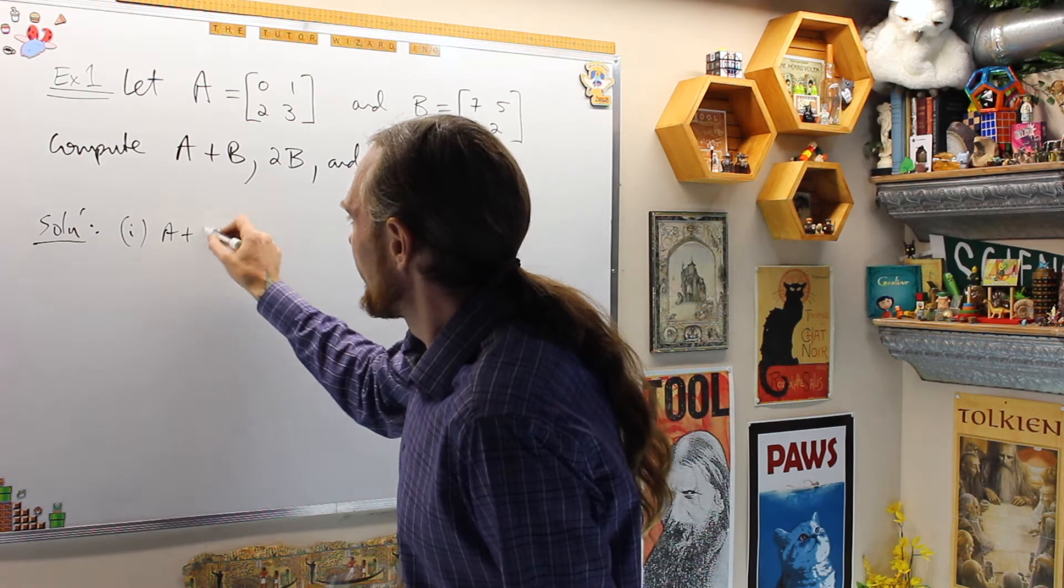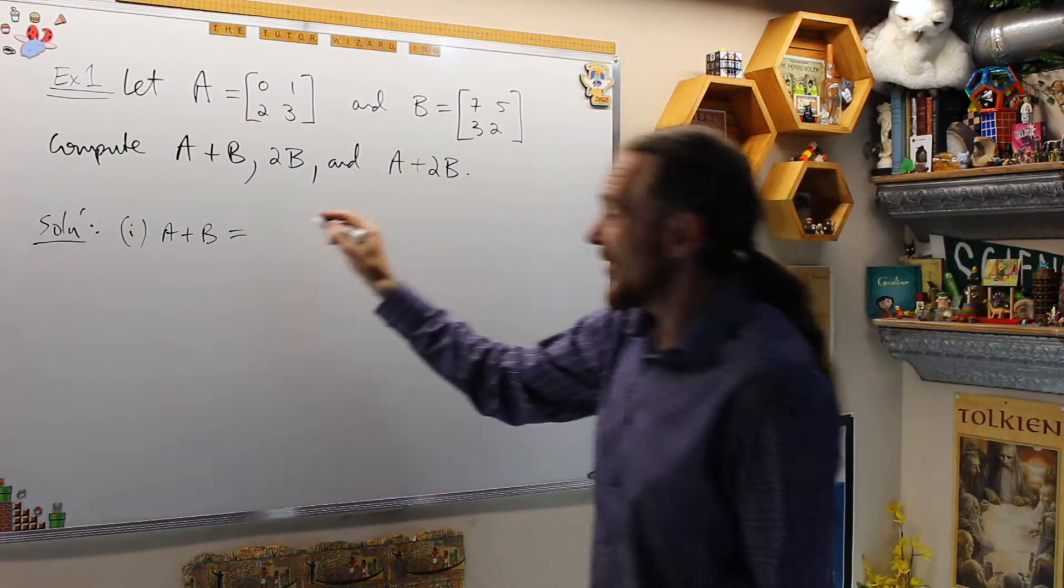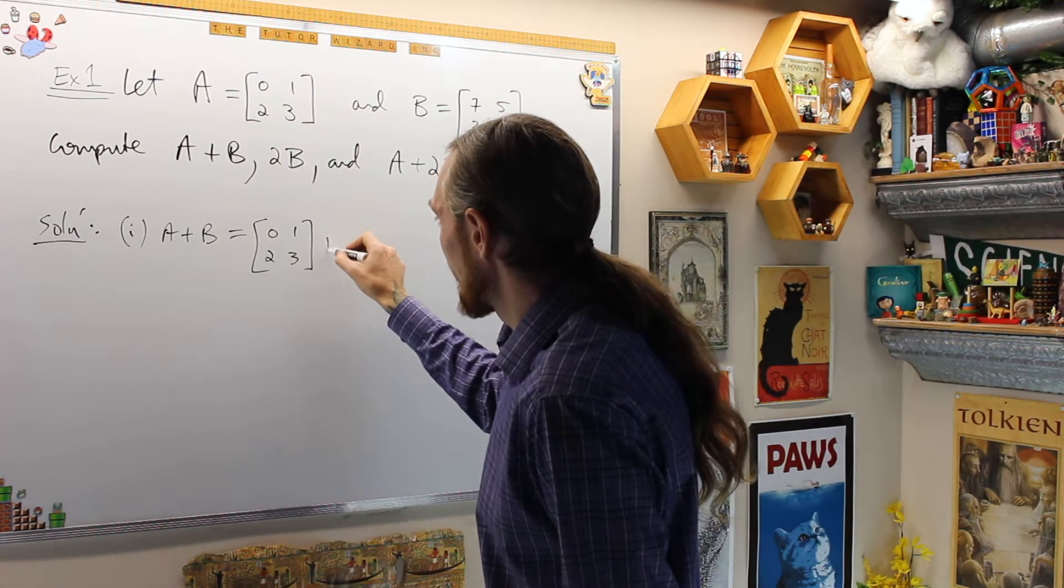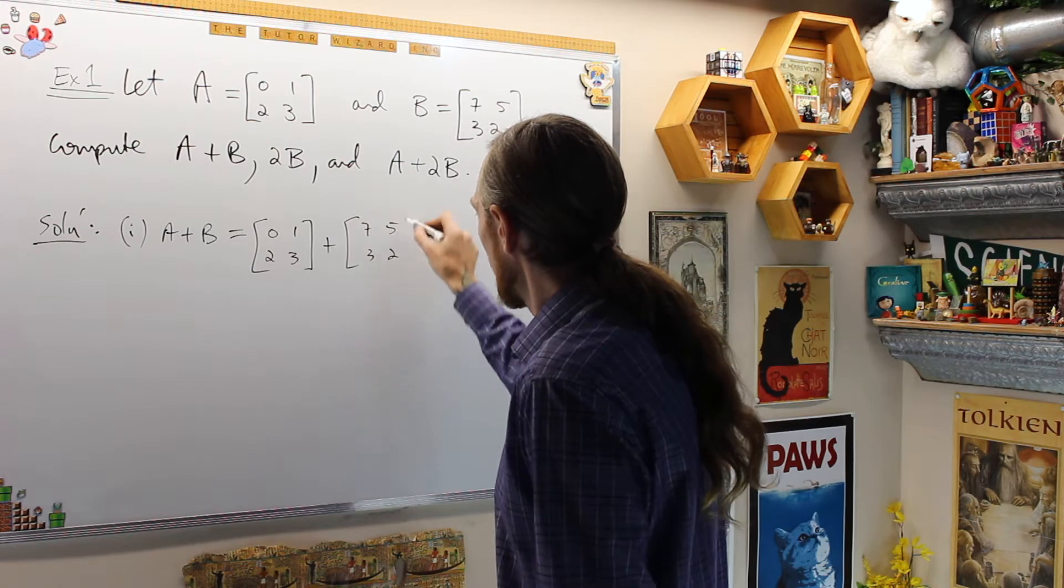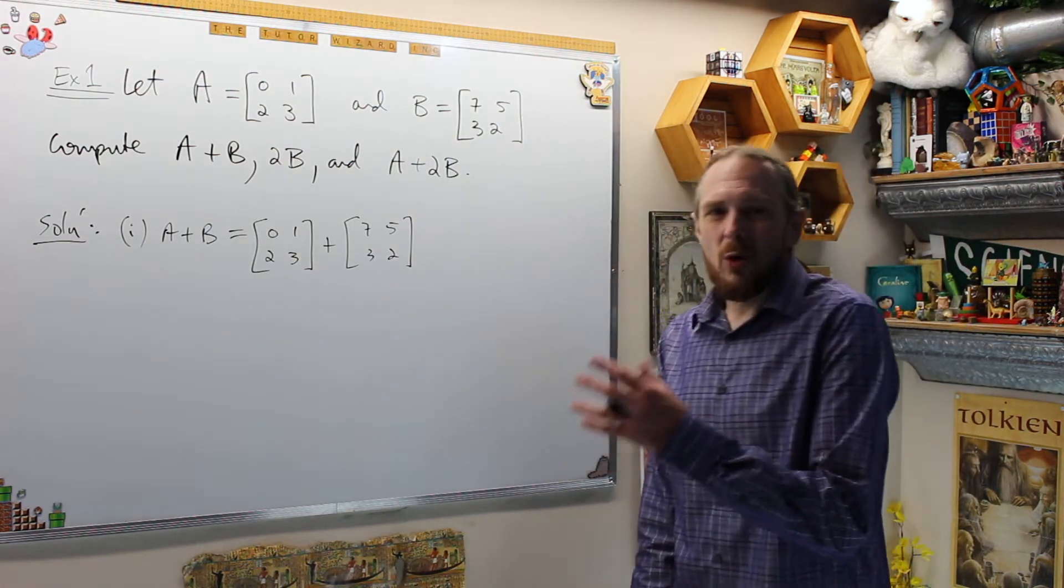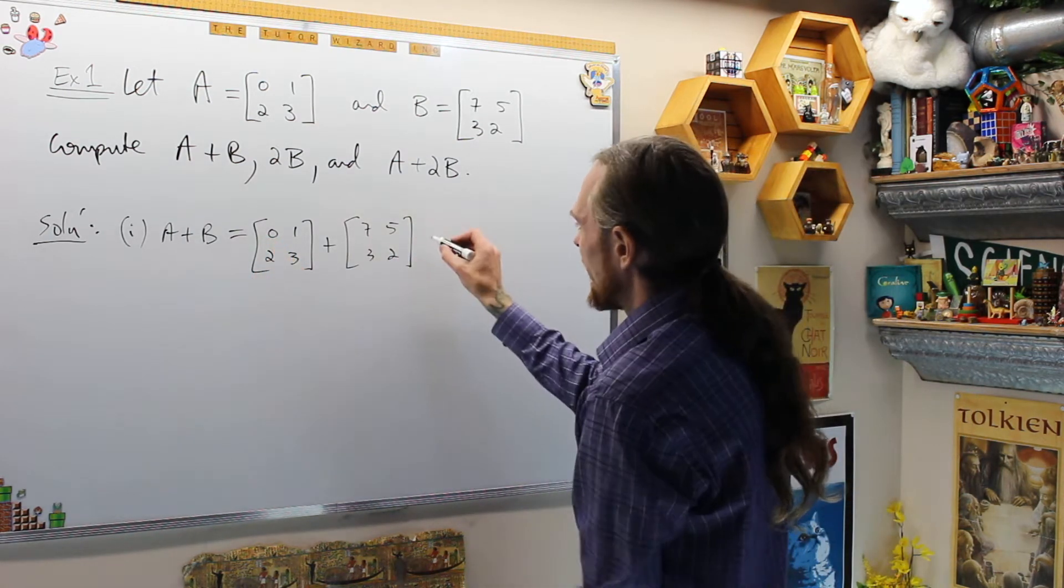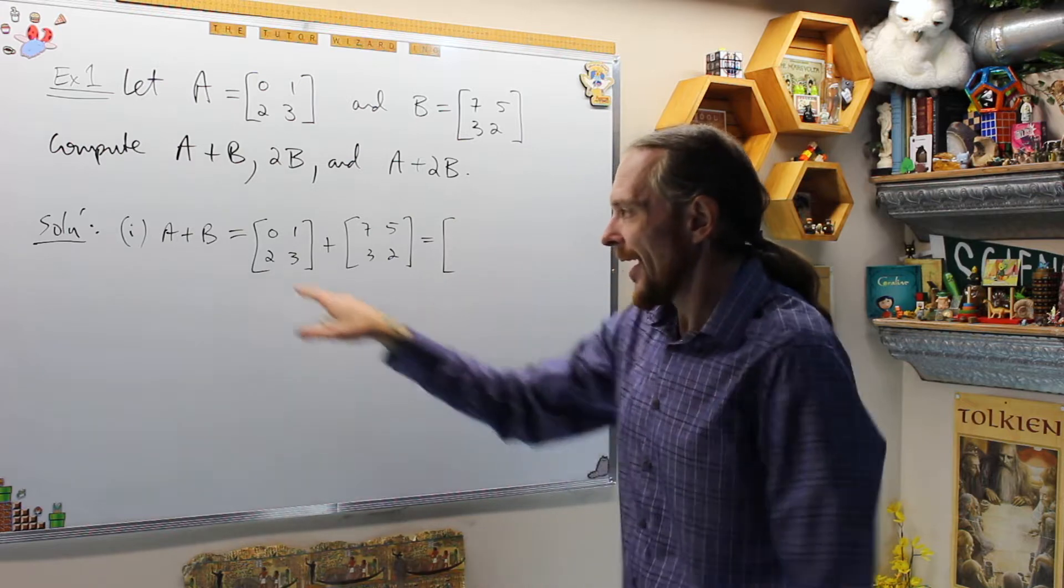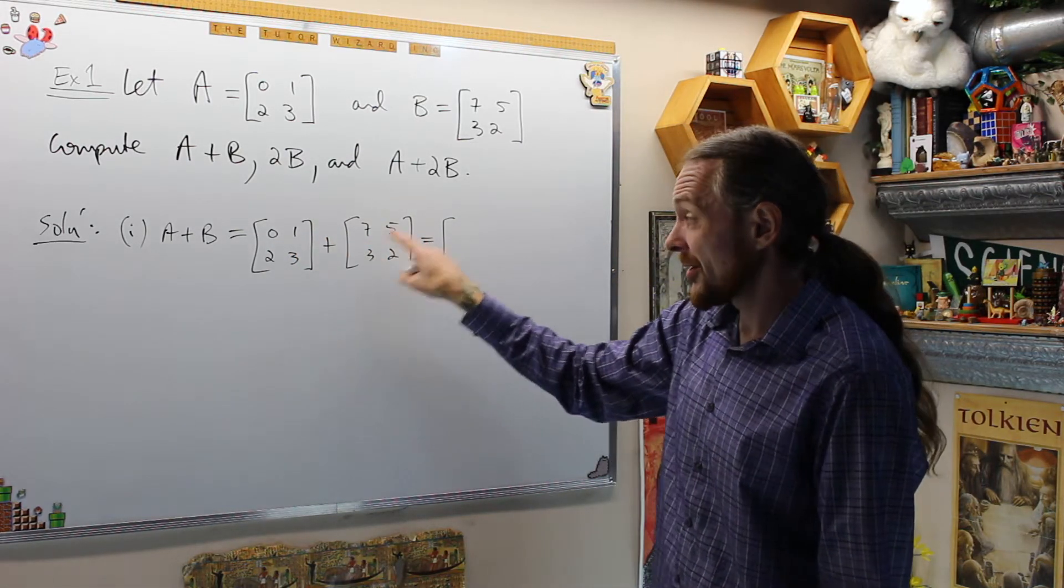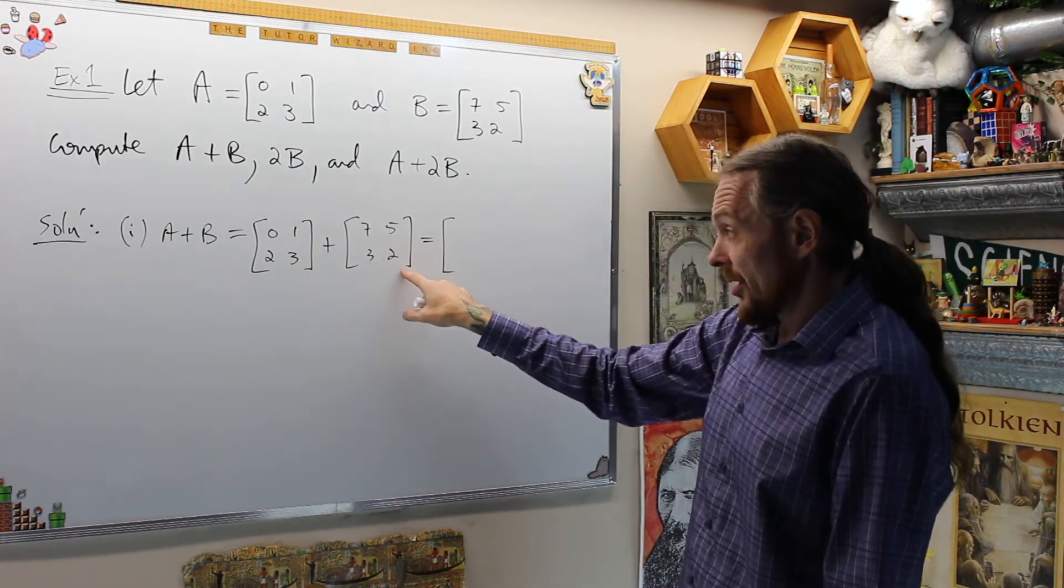For the first one solution, let's compute A+B. What that says is by definition, when you have that, you're going to write the object, we have the two by two rectangular arrays. Now what that says is we call it coordinate-wise addition. What that means is you're going to add corresponding coordinates.